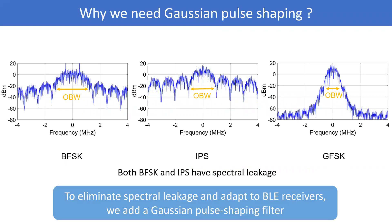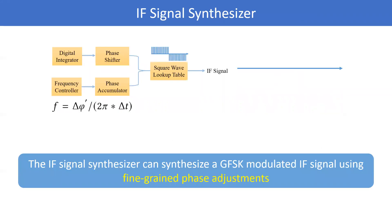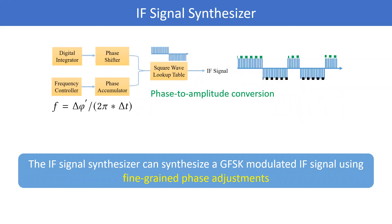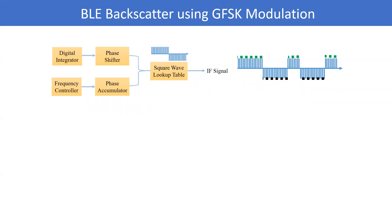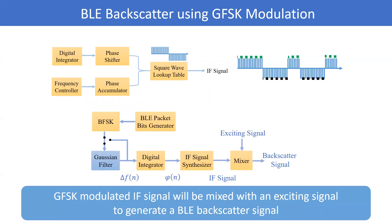To eliminate spectral leakage and support adaptive BI receivers, we add a Gaussian-shaping filter. We design an RF signal synthesizer to generate a GF signal, which will be mixed with the exciting signal while transmitting.